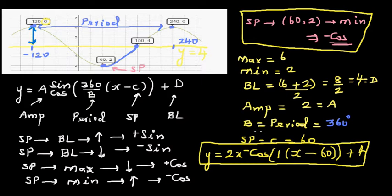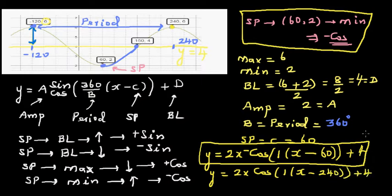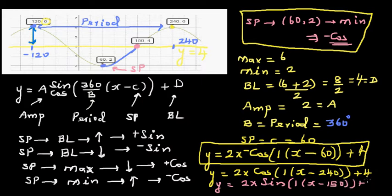If you take 240 as the starting point, you are starting at the maximum, so it's a positive cosine graph: y = 2 · cos(x − 240) + 4. If you start at 150, the graph is going up from the baseline, so it's a positive sine graph: y = 2 · sin(x − 150) + 4.